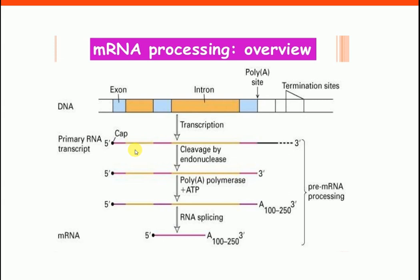In pre-mRNA processing, a 5' cap is added at the 5' end to protect the RNA from degradation and to help in ribosome binding during translation. A poly-A tail is also added at the 3' end — its function is similarly to protect from degradation and assist in ribosome binding.